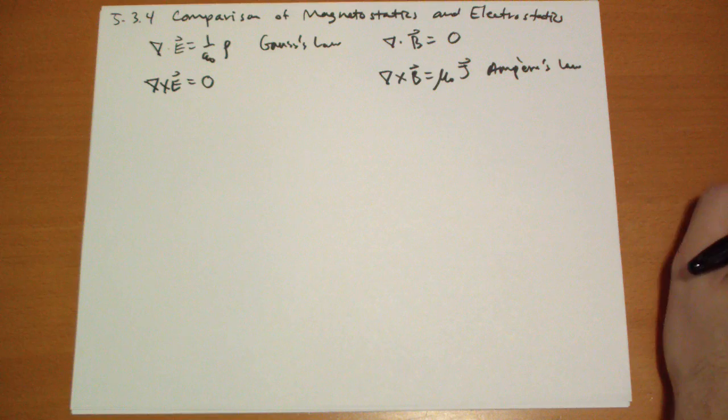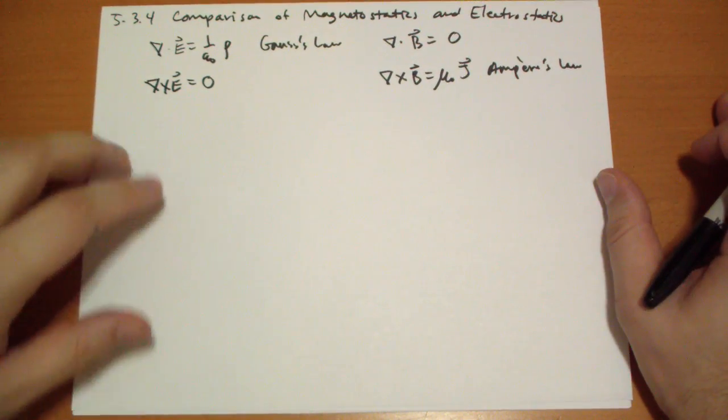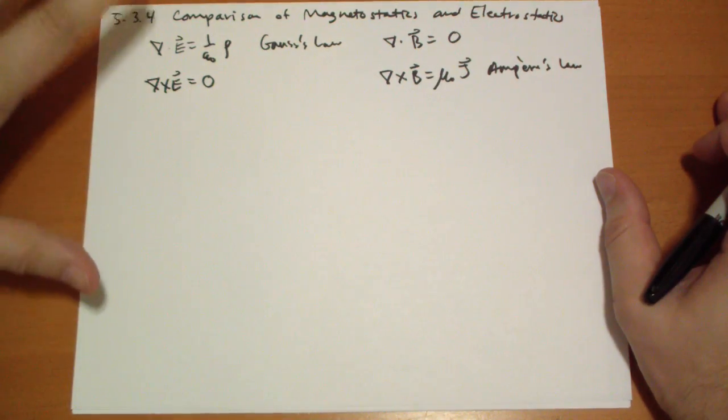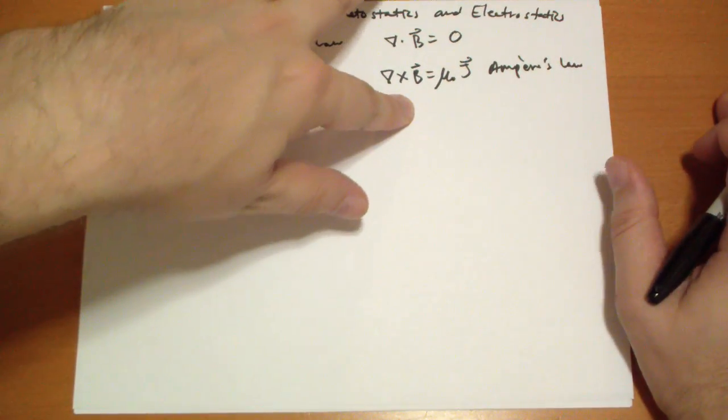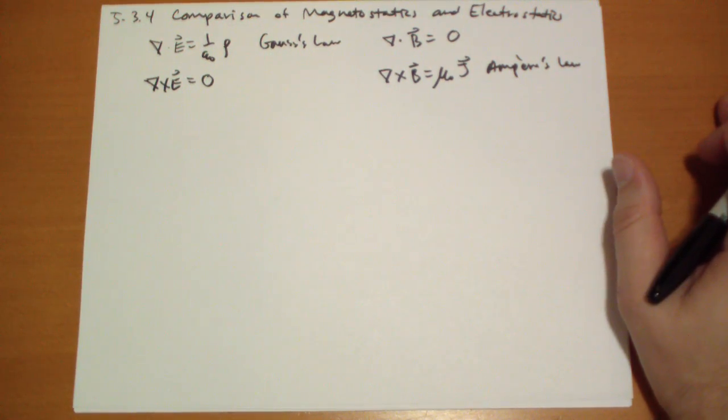If you set the boundary conditions of the electric field being 0 at infinity and likewise the magnetic field being 0 at infinity, then these are all you really need to calculate the electric field and the magnetic field in magneto and electrostatics.